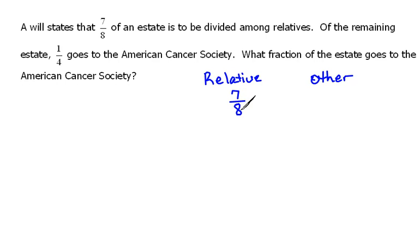Well, if you think about the different pictures that we've drawn before, if 7 out of the 8 parts go to the relatives, that leaves 1 out of the 8 parts to go to somebody that's not a relative.